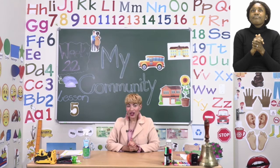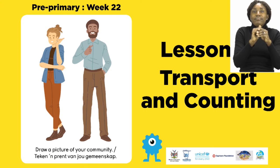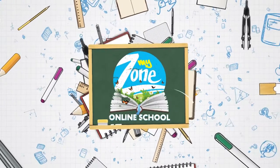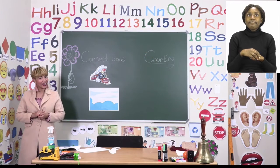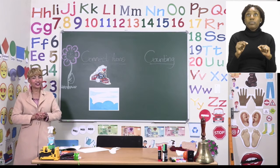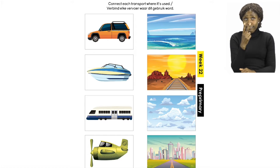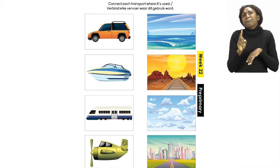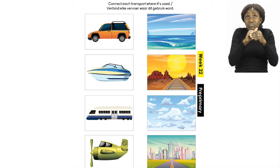Now let's see what you are going to learn about today. We are going to learn about transport and counting. For this part of our lesson, let's turn our booklets to page 29. On page 29 you will see some nice bright pictures. We have to connect each transport to where it is used.